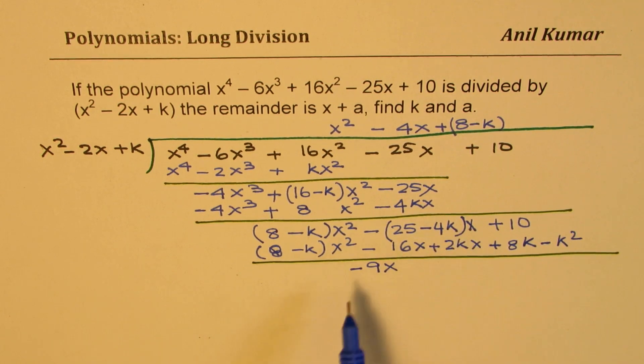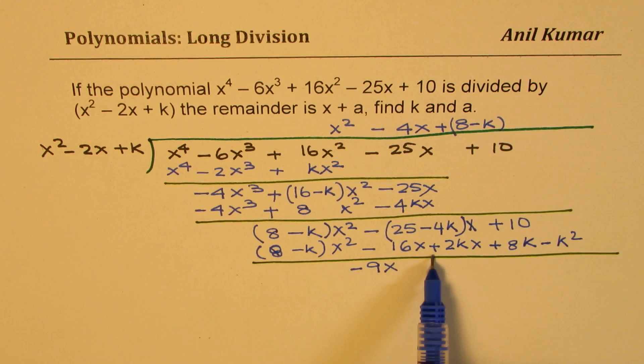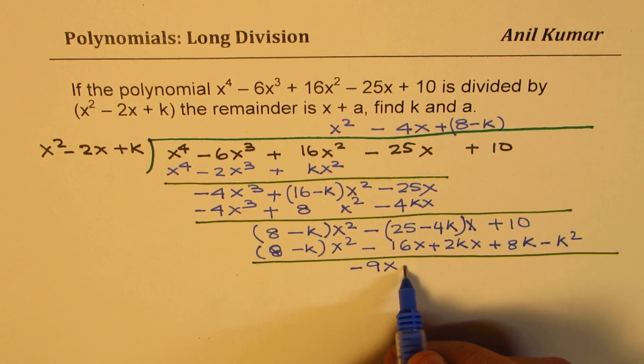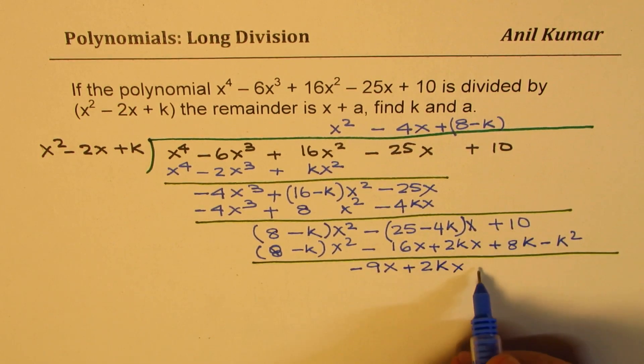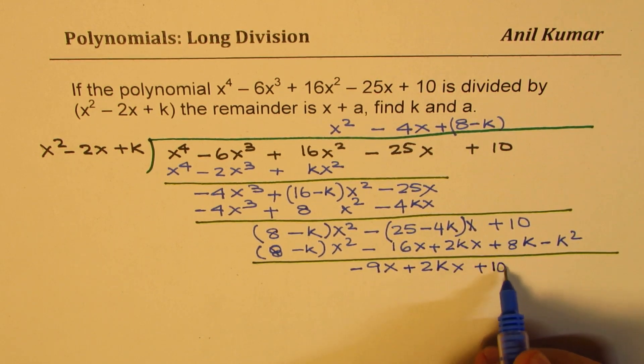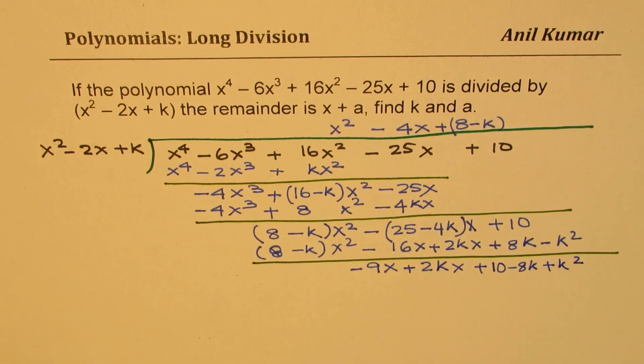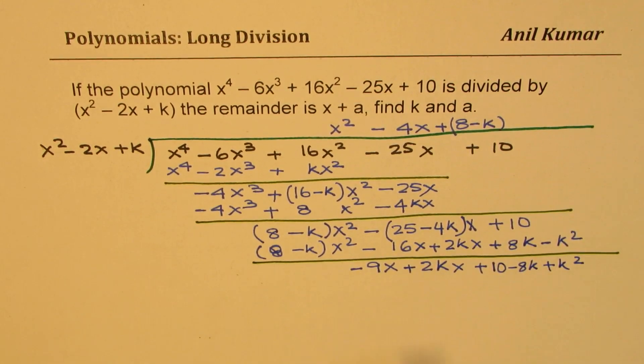And as far as the k terms are concerned, +4kx take away makes it, we take away positive, so we get 2kx. So we get +2kx. And here we have the constant term 10 - 8k + k^2. Does it make sense to you?